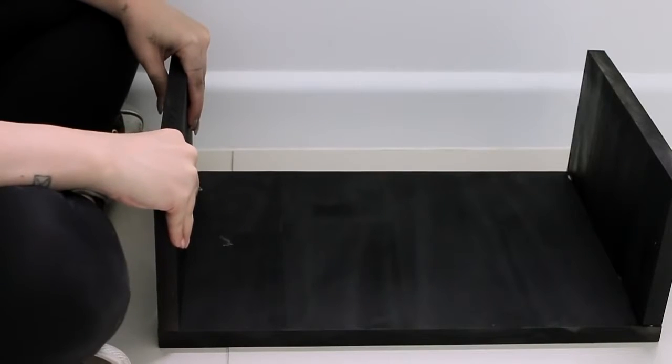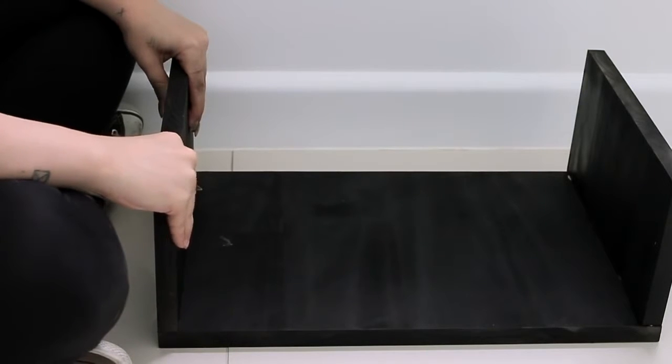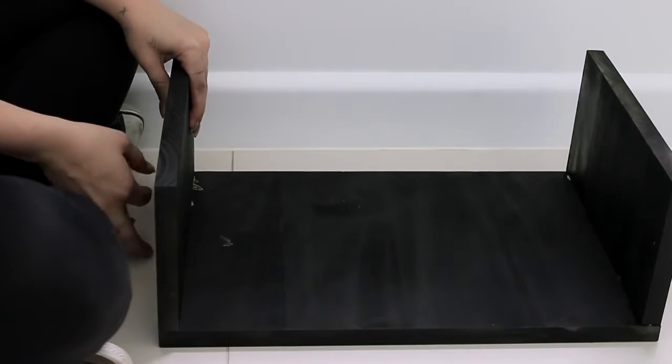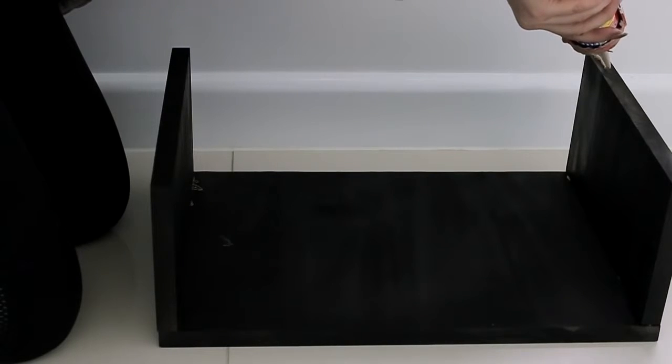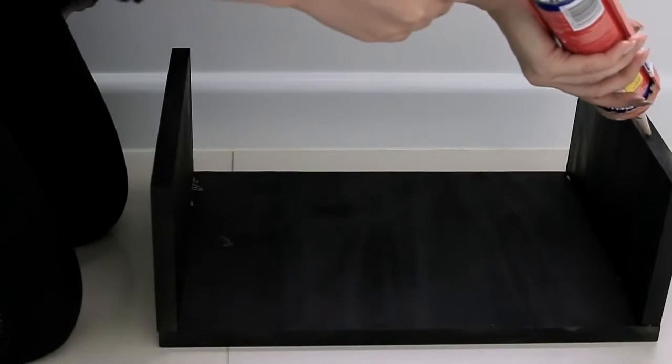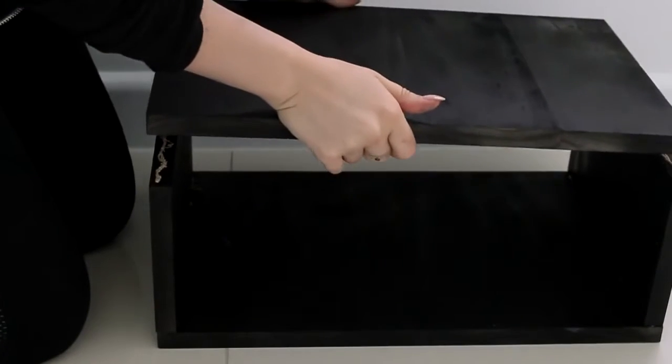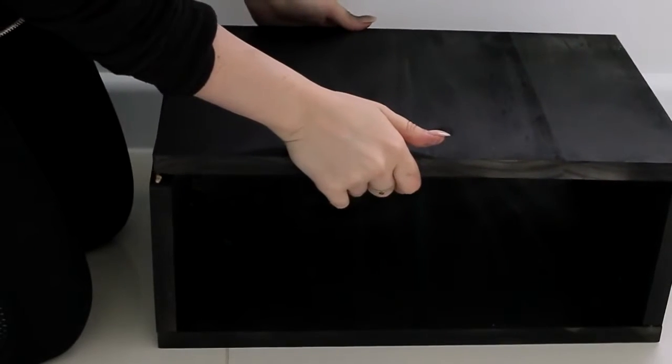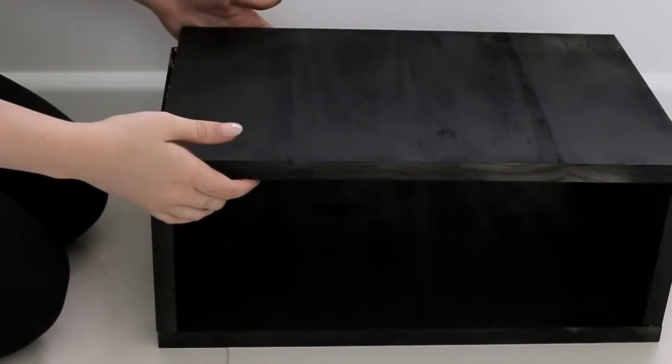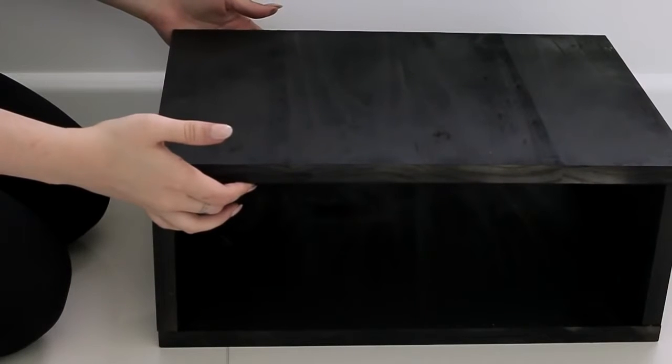And then I'll put some more liquid nails on the top of those pieces and then I'm going to put the top of the table on. The liquid nails isn't the final way to secure it, it's just how I'm going to hold it in place for now. If you have some clamps feel free to clamp the pieces together so they don't move.